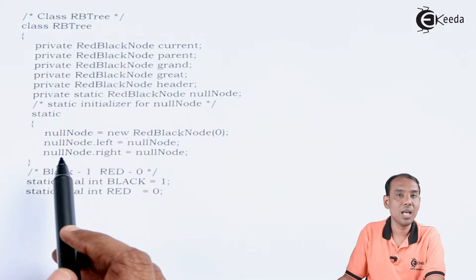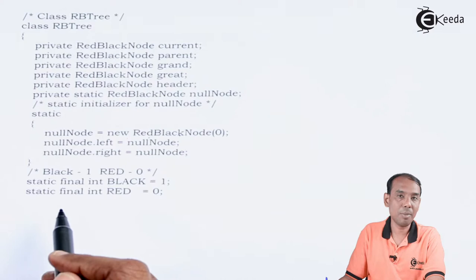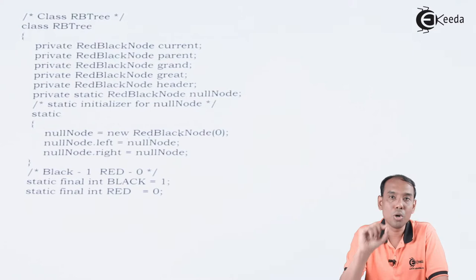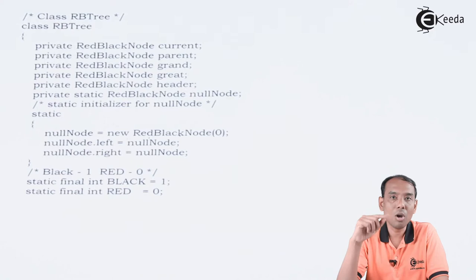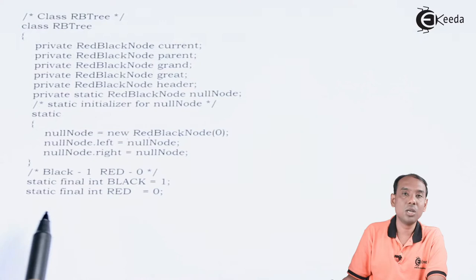Then we define the static color constant values. We have static final int BLACK equal to 1 and static final int RED equal to 0. So whenever a node value is 0, the color of that node is red, and whenever it is 1, the color is black. You must remember that 0 and 1 have special meaning in the case of red-black trees.